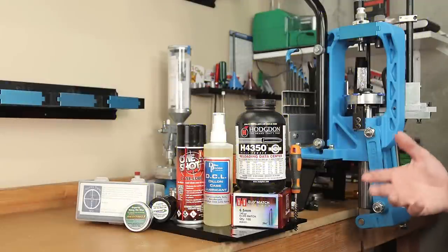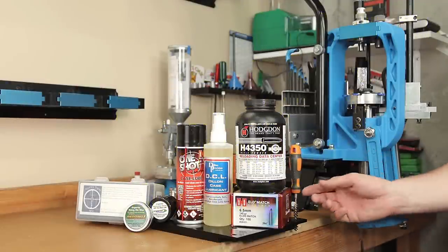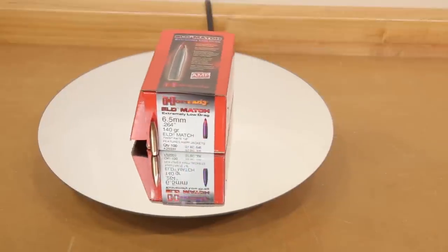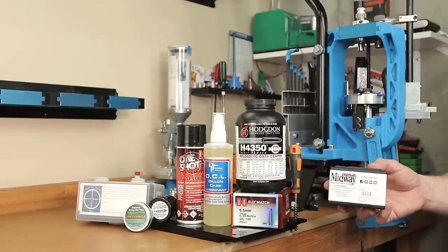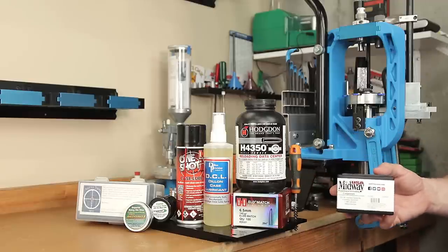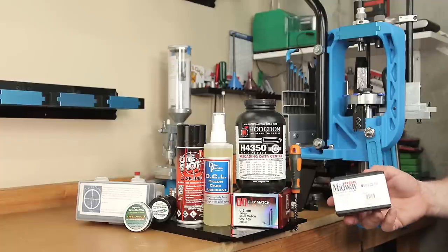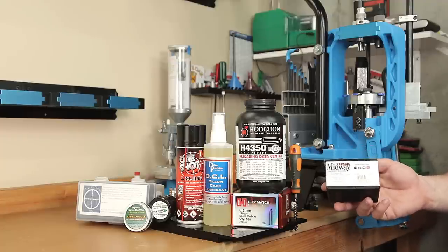One thing that might seem odd is I'm really not concerned about groups in this particular case. For today's test these are the 140 grain ELDs but they're factory seconds that I picked up from Midway on a sale. Accuracy is really not ultimately what I'm trying to measure here. Mostly it's the standard deviation of performance, though I will show you guys group information if you're interested.